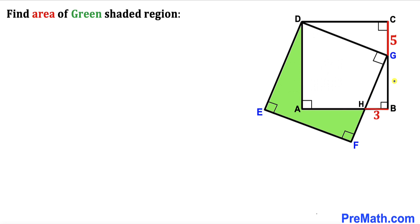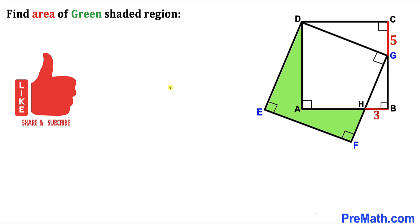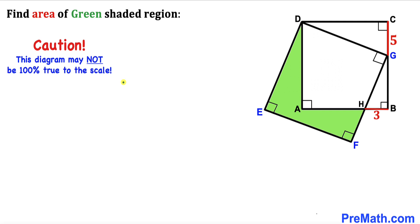Welcome to pre-math. In this video we have got two squares ABCD and the other square DEFG put together as shown in the diagram, such that segment HB is 3 units and segment CG is 5. Our task is to calculate the area of the green shaded region. Please keep in mind that this figure may not be 100% true to scale.